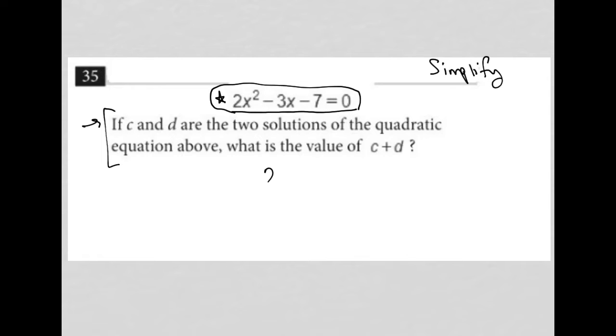I'm going to rewrite 2x squared minus 3x minus 7 equals 0. I'm going to go straight to using the quadratic equation or formula,